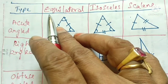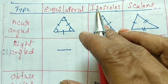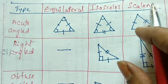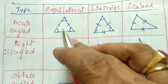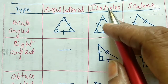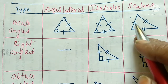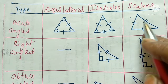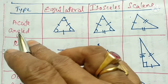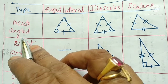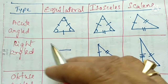Based on the length of the sides, we have three types: equilateral triangle, isosceles triangle, and scalene triangle.